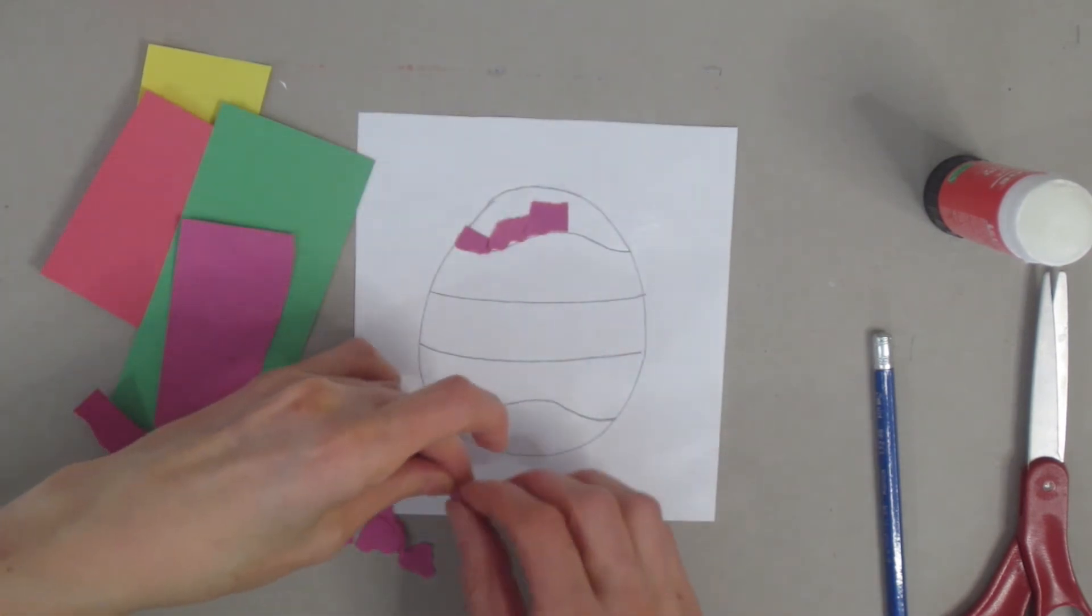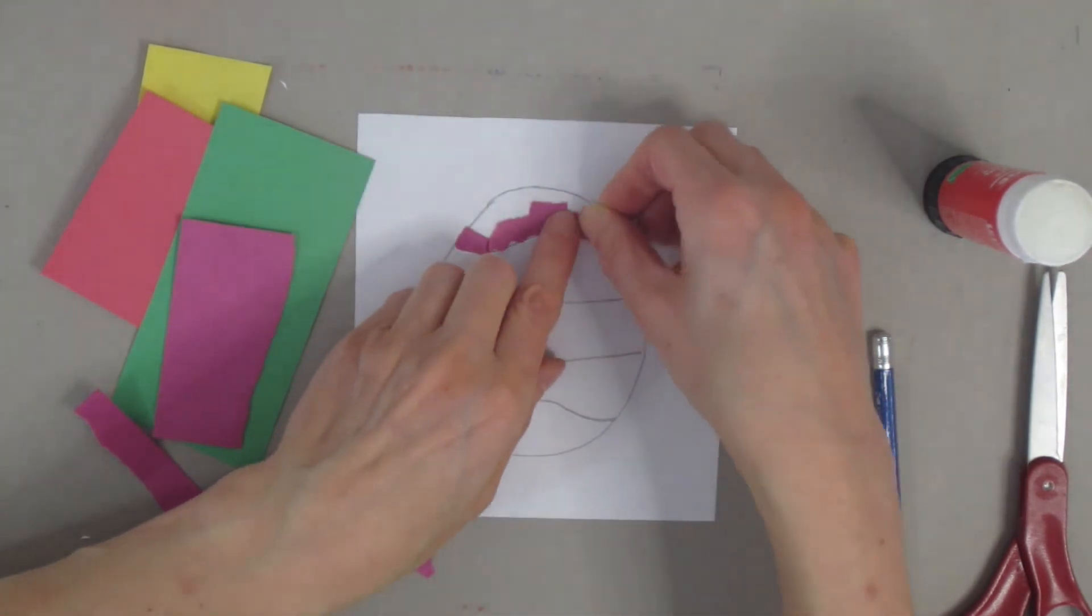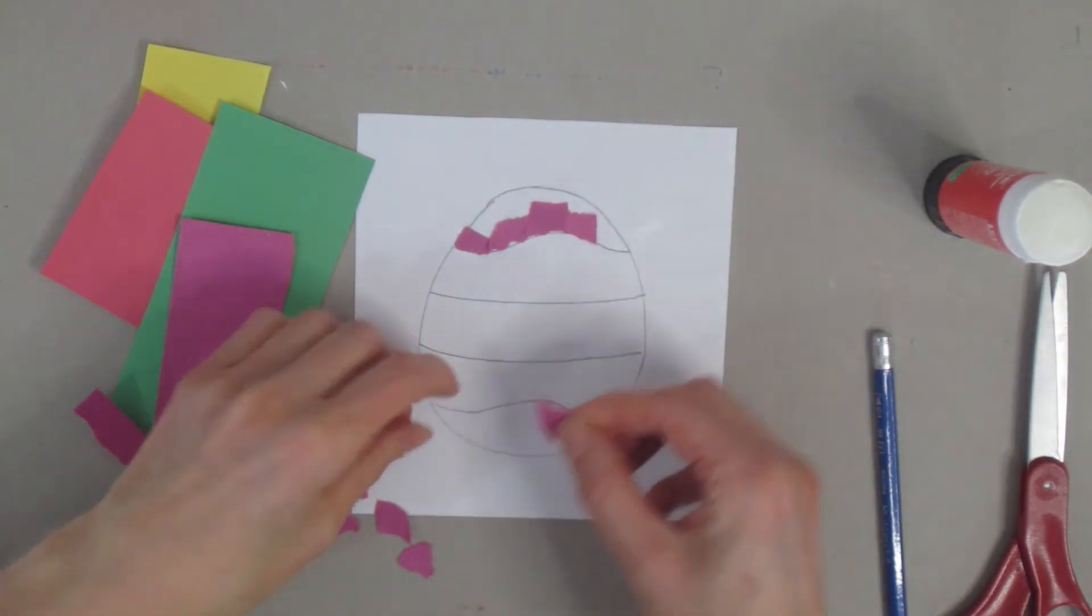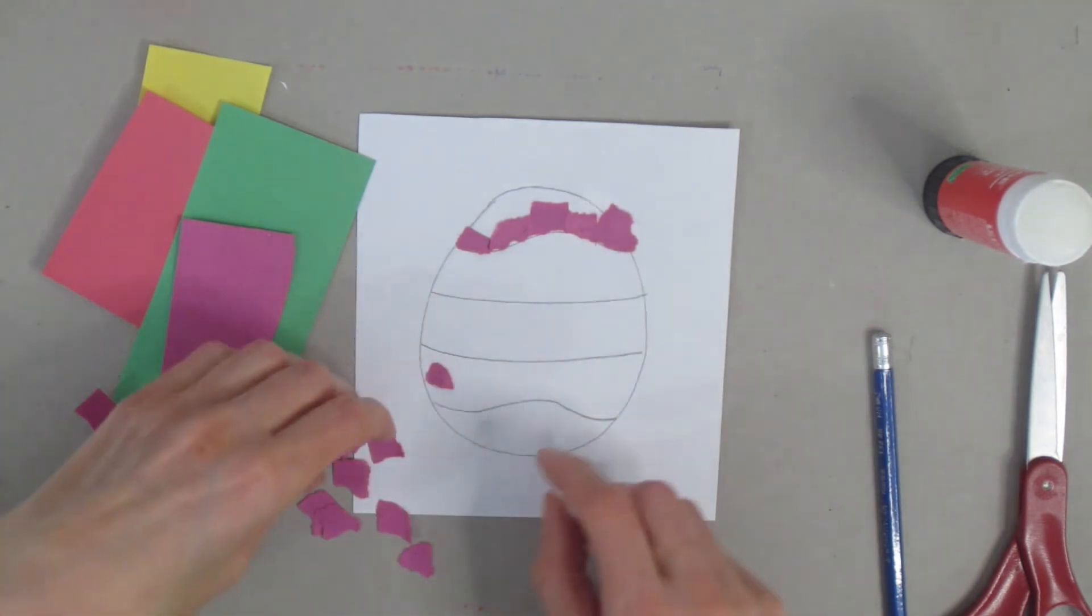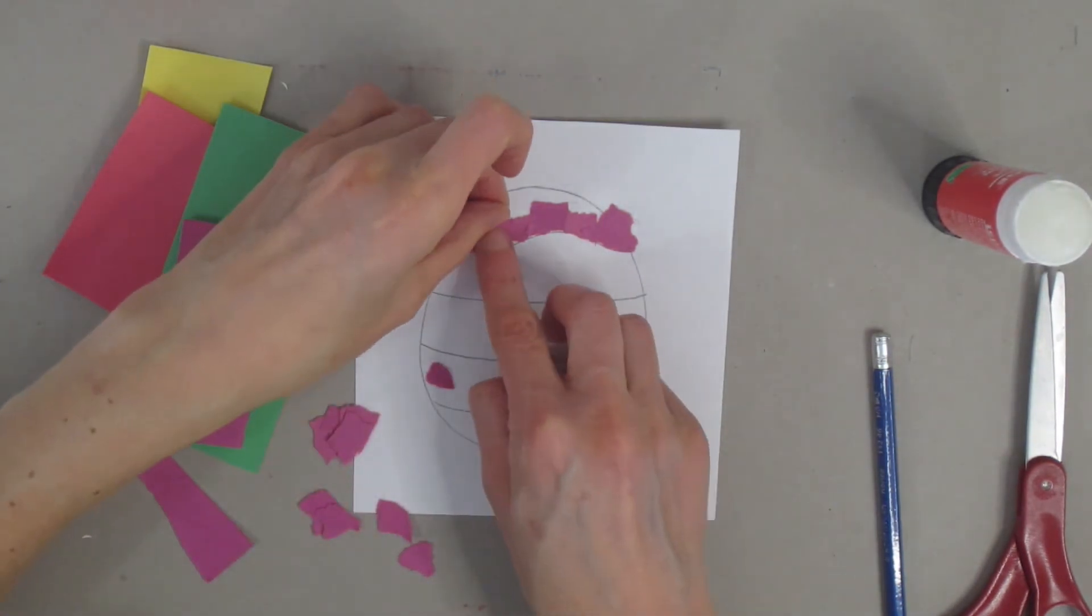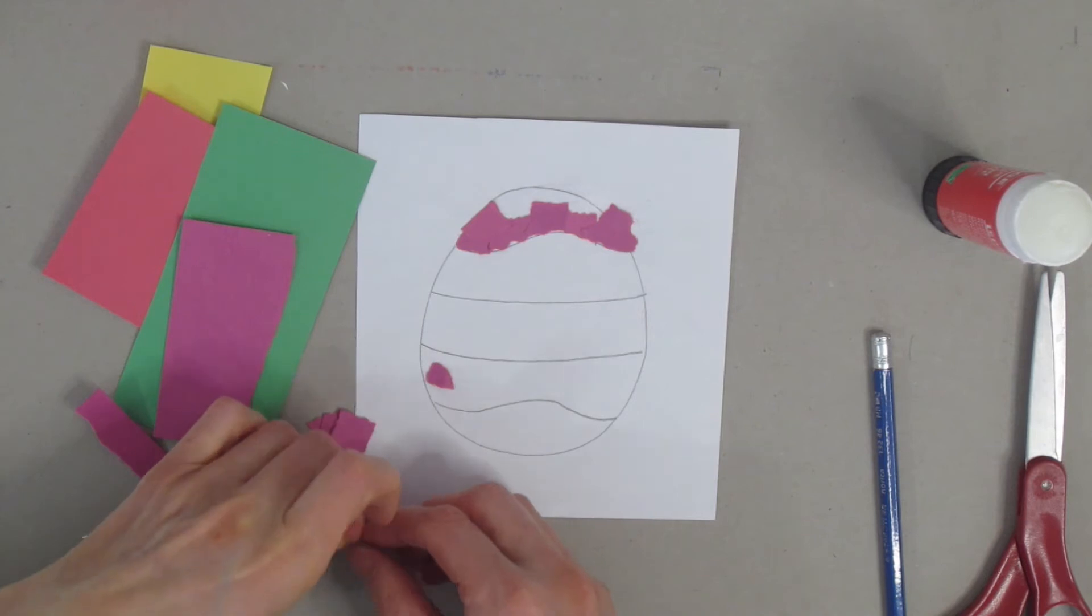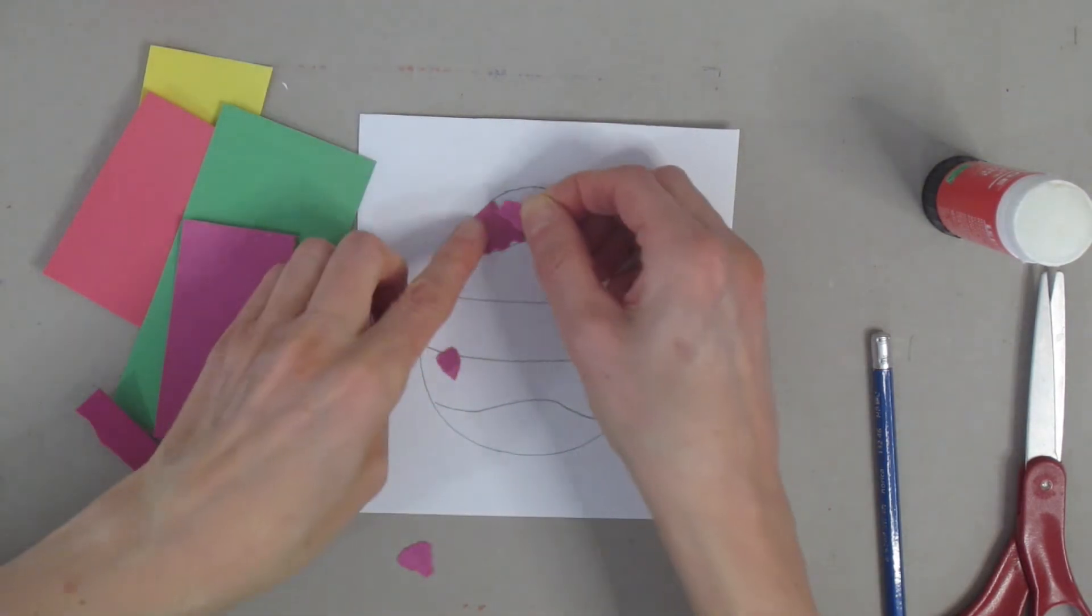Now as you're gluing, you're going to overlap some of your pieces and that's okay because you want to cover up any white spaces. And then when I get to the end, see how it goes over top of the edge? That's okay because we're going to trim later.